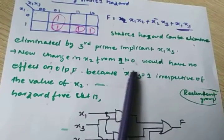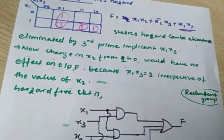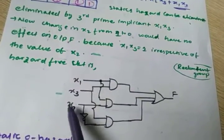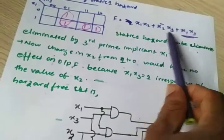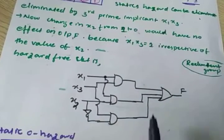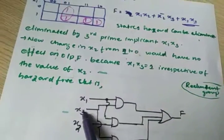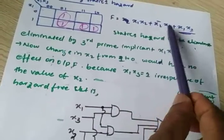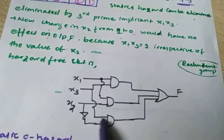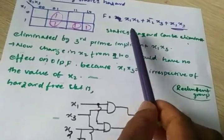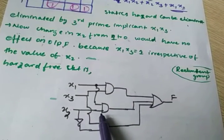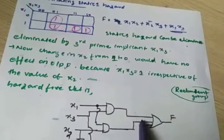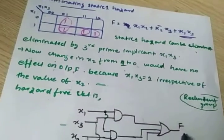Now changing x2 from 1 to 0, we will check. First, draw the circuit for x1x2 + x2_bar x3 + x1x3. So x1x3 AND gate, x2_bar x3 AND gate, and x1x2 AND gate — all connected to an OR gate to get output F.